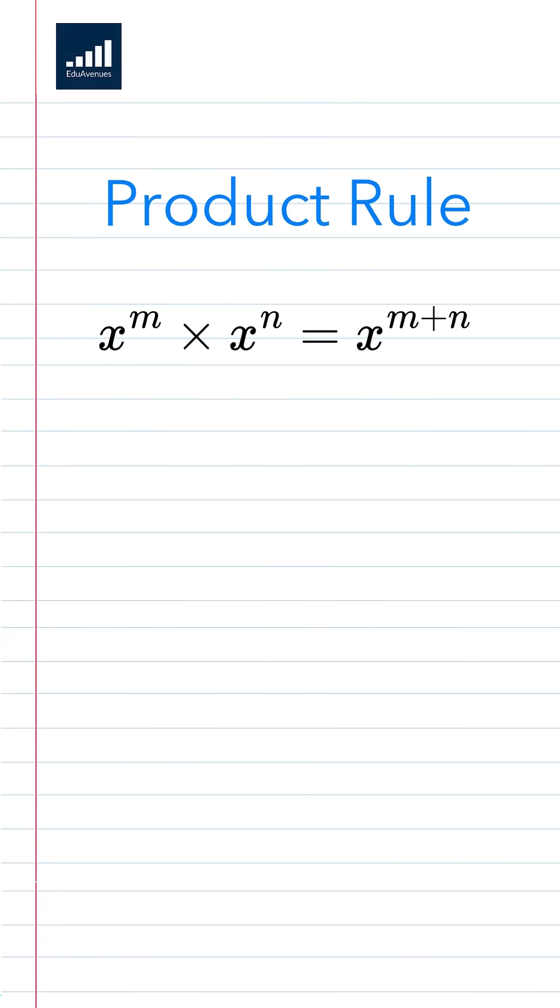Rule number one, the product rule. When you multiply powers with the same base, add the exponents. Like a squared times a to the sixth becomes a to the eighth.